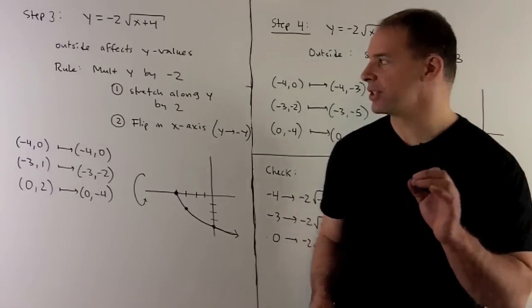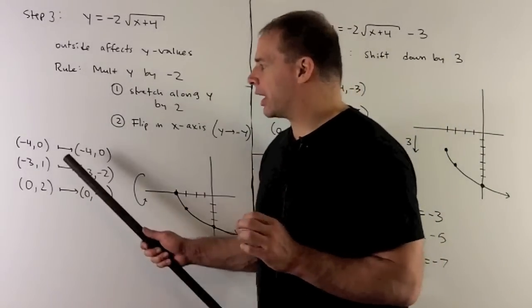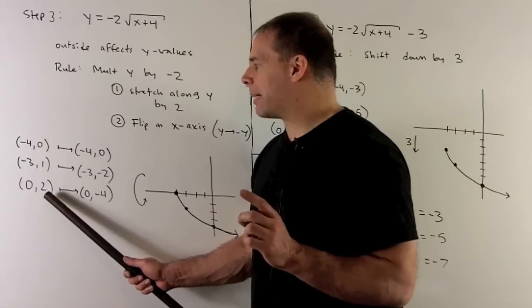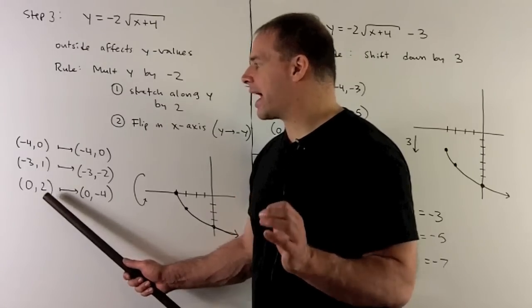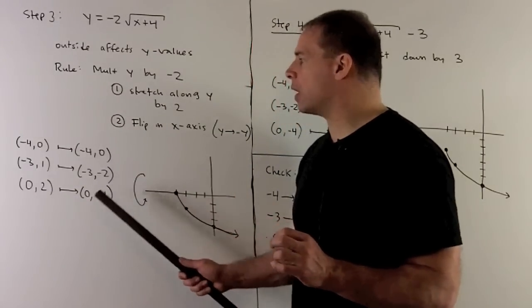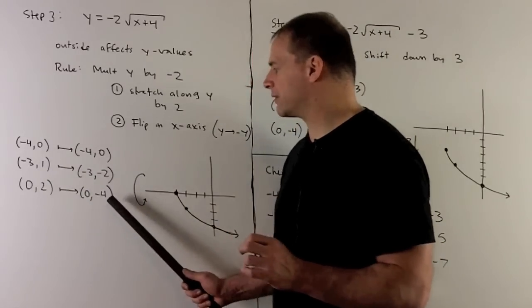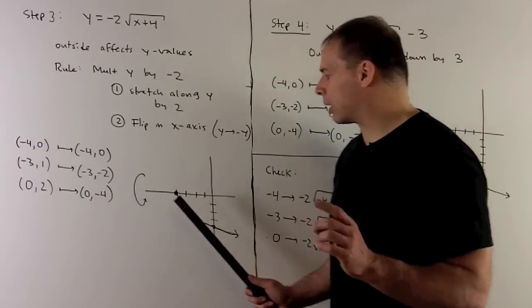Now let's take a look at our points. So here, our square root of x plus 4 is what's in the y column. So we're going to multiply that by a minus 2. So it's going to carry us to the points minus 4,0; minus 3, minus 2; and 0, minus 4.